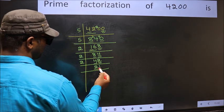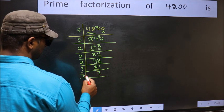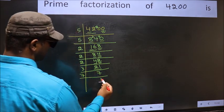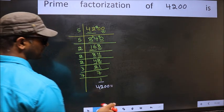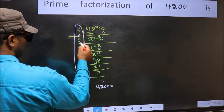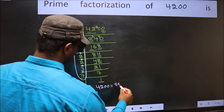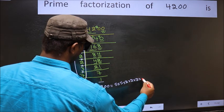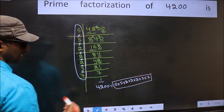Now here we have 21. 21 is 3 sevens = 21. Now we have 7. 7 is a prime number, so 7 ones = 7. So we got 1 here. The prime factorization of 4200 is the product of these numbers: 5 × 5 × 2 × 2 × 2 × 2 × 2 × 3 × 7. This is the prime factorization of 4200.